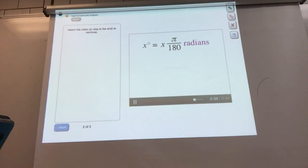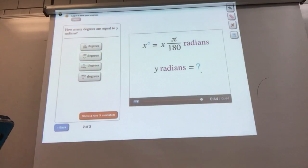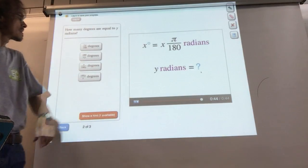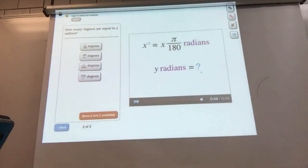Next question: Suppose you have an angle that's y radians. How many degrees is that equal to? If we have an angle of y radians, how many degrees are equal to y radians? Pi y over 180 degrees, 180 over pi y degrees, pi over 180 y degrees, or 180 y over pi degrees?